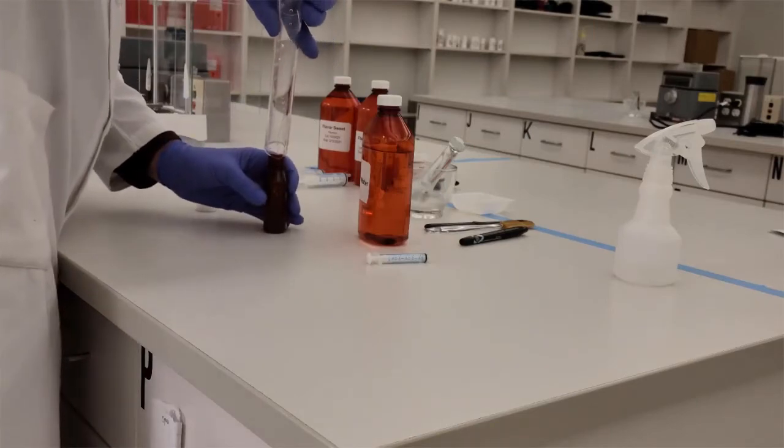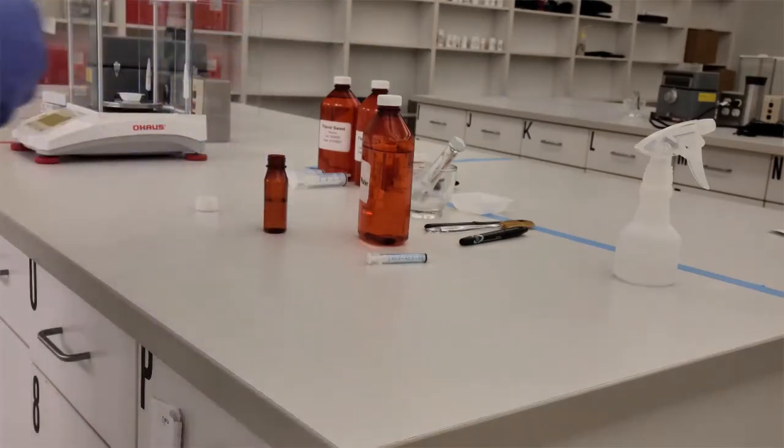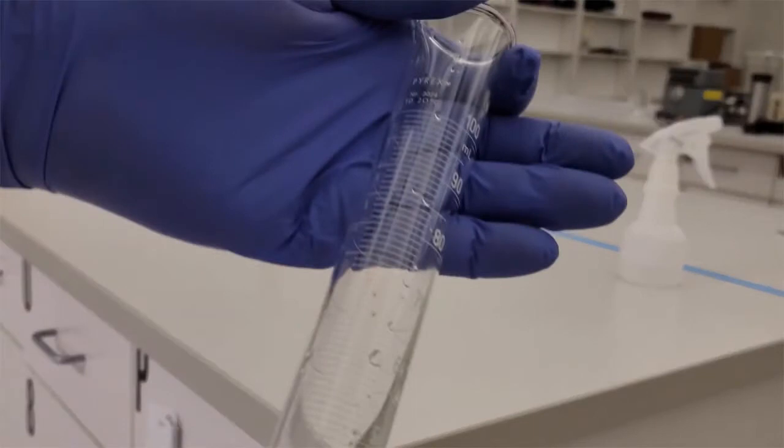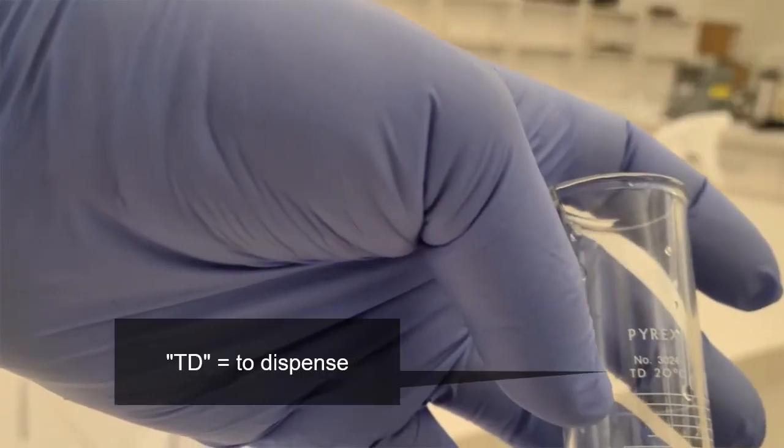Once that's done, I'm going to transfer it into my bottle. And now this is where I know I've measured 35 mLs in the graduated cylinder, but what about the liquid that's remaining inside of the graduated cylinder?